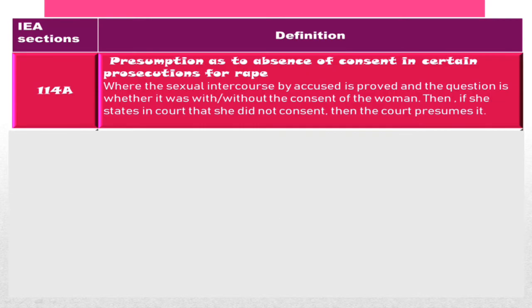Section 114A IEA talks about presumption as to absence of consent in certain prosecutions of rape. If a rape has occurred and the question is whether it was with or without the woman's consent — if the woman states that she did not consent — then the court presumes the same.